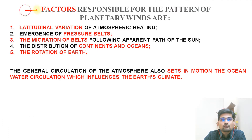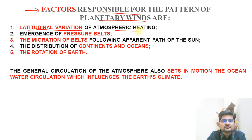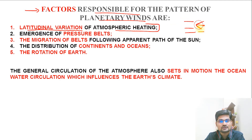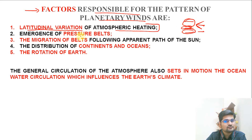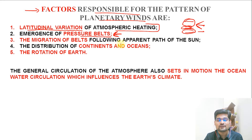Now let's understand the factors responsible for the pattern of planetary winds and circulation. The first is latitudinal variation in atmospheric heating — every latitude receives different levels of insolation and differential heating occurs at every level. The second is the emergence of pressure belts, which we have discussed in detail in the previous session. If you haven't watched that video, please go to the climatology playlist and watch the video on temperature and pressure belts.